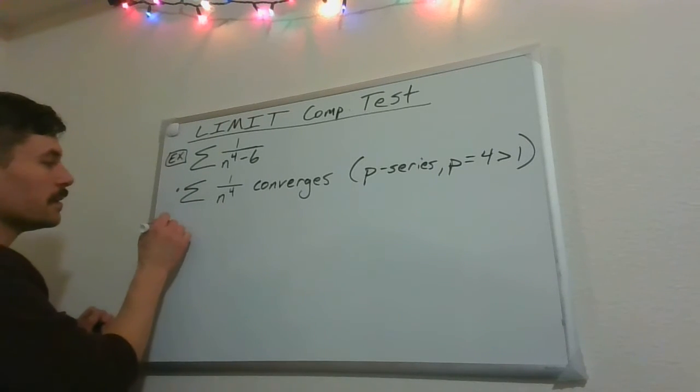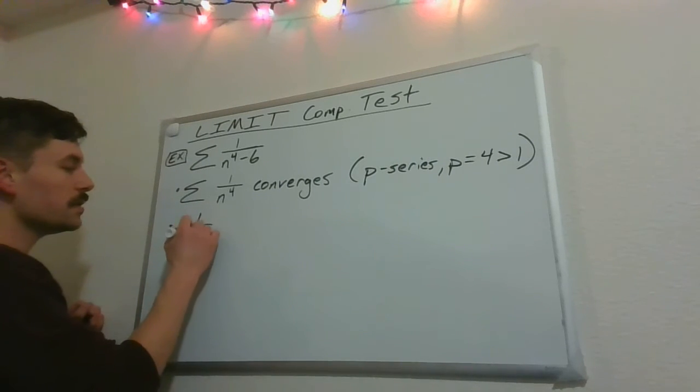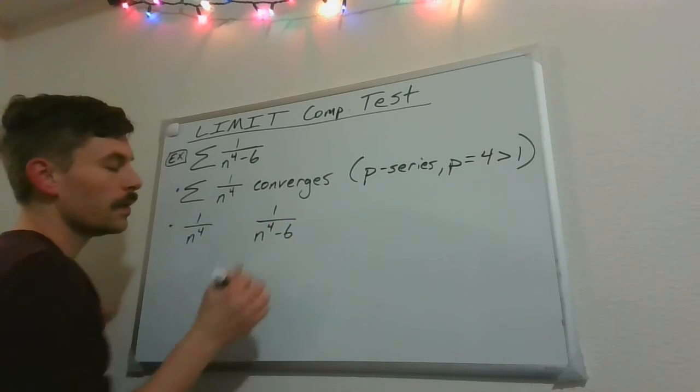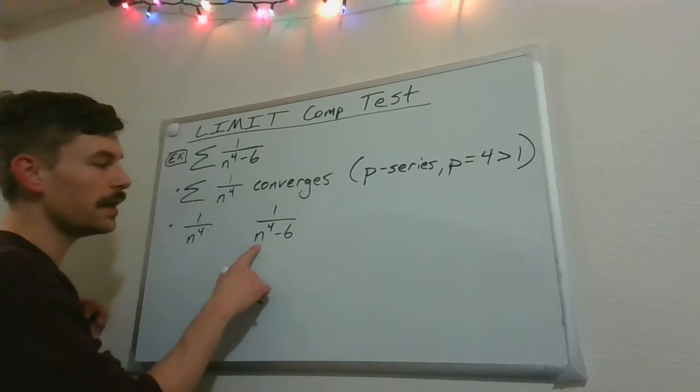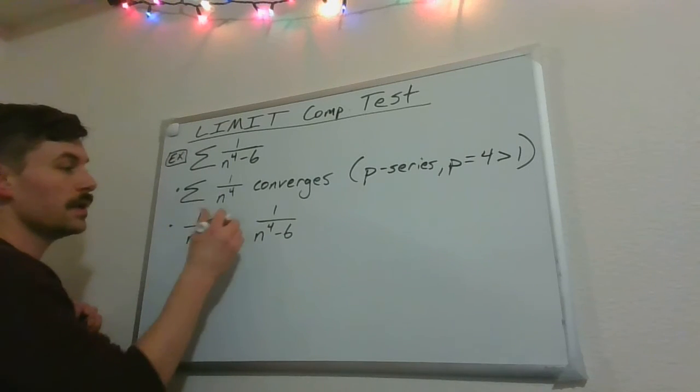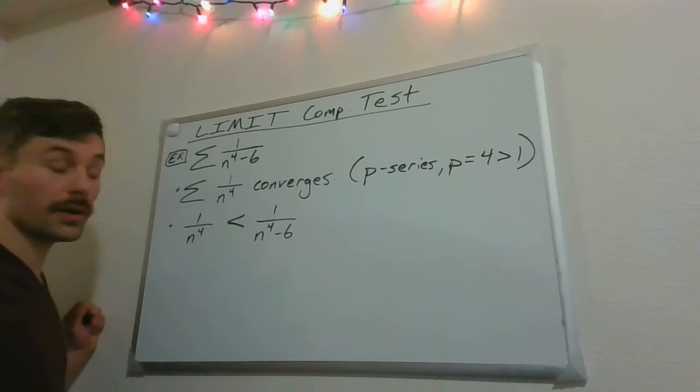So then we say, great, if we try to use a comparison, the only issue with this is that the denominator here, n to the 4th minus 6, the denominator is smaller than this, meaning the fraction as a whole is going to be larger.